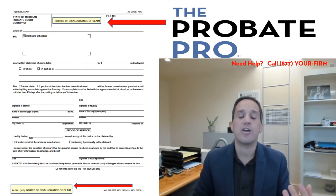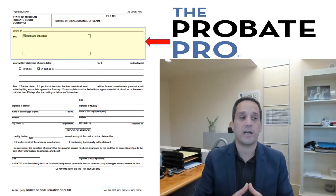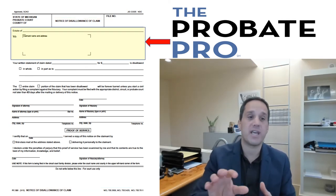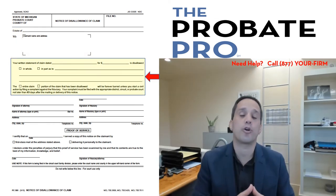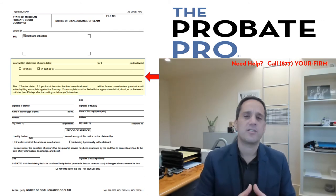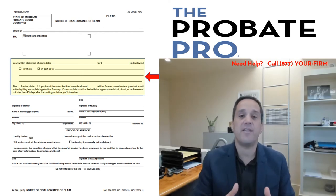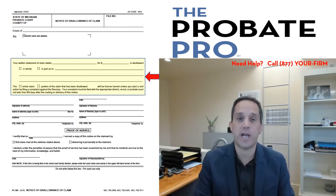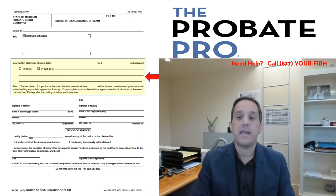If they appropriately handle the disallowance correctly, they can continue to perfect their creditor claim against the estate. Within that form, you identify as personal representative the estate name, the creditor name, and then whether you're allowing or disallowing the claim in whole or in part. Sometimes creditor proof of claims have many different items, and this form allows you to identify which part of the claim you object to and which part you are allowing.